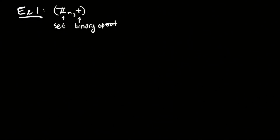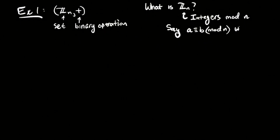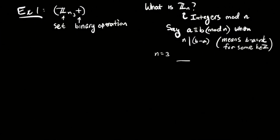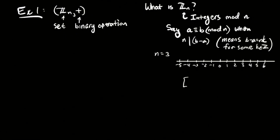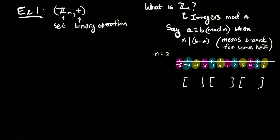The first example we'll look at are the integers mod n with addition. In case you don't remember what the integers mod n are, we're taking two integers and saying they're equivalent to each other whenever n divides the difference b minus a. That means b minus a is a multiple of n. If we take n equals 3 and sketch out some integers on the number line, any two integers that are three units apart go into the same basket, which means there are three possible baskets.